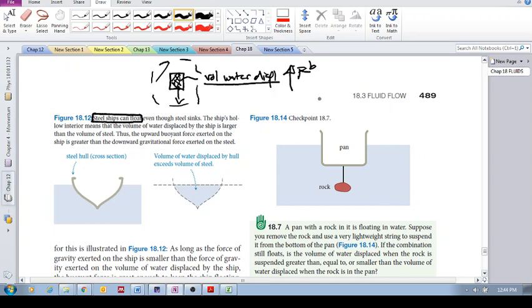But then you've got Fg acting down, Fg Earth on the steel. And of course, that downward force of gravity on that block of steel is going to be much greater than the upward buoyant force, which is based on the volume of that water displaced.